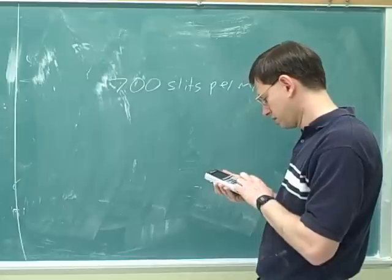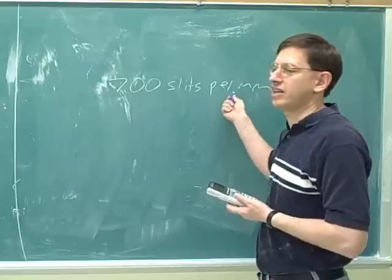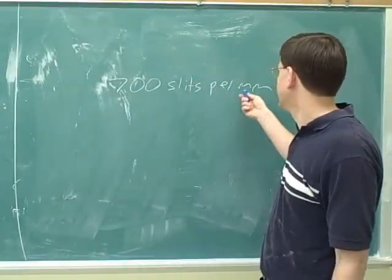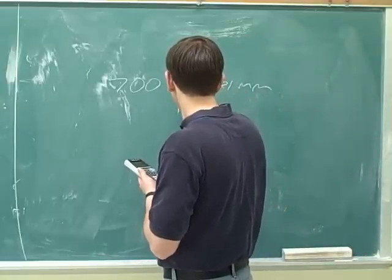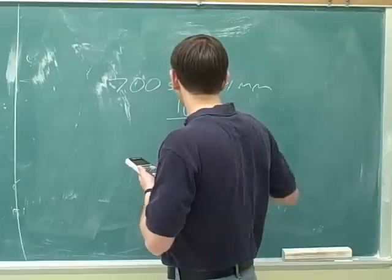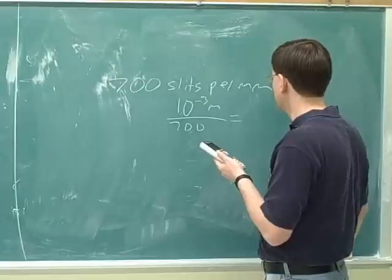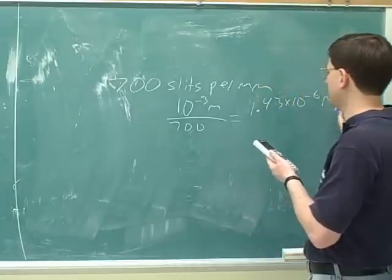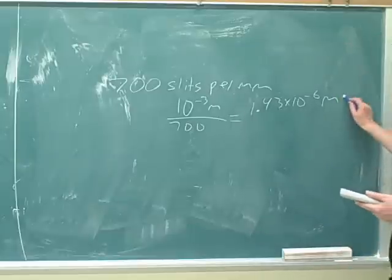So 1.43 times 10 to the minus 6 meters? Yeah. So you translate it into meters. So you always have to make sure you're doing the right conversions. Well, here we have 1,000 millimeters in a meter. So you would end up with 10 to the negative 3 meters over 700 or 0.001 meters. And then that gives you 1.43 times 10 to the negative 6 meters. Is that what you got? Yeah. That's D.